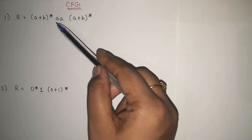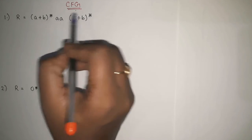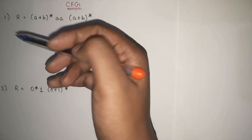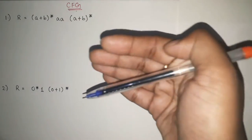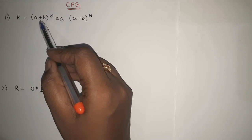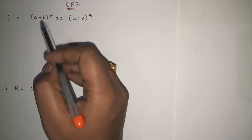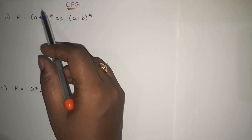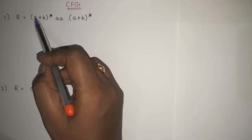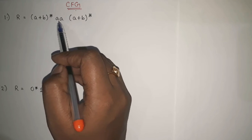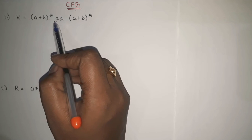Here, the regular expression shows that 'aa' is clearly in the center. Star means zero or more occurrences — meaning this part can be there or cannot be there. The (a+b)* means any number of combinations of a and b — n number of a's, n number of b's, or combinations together, or none of them. And in between, we are having 'aa' with no star, which means 'aa' is compulsory. It has to be there.